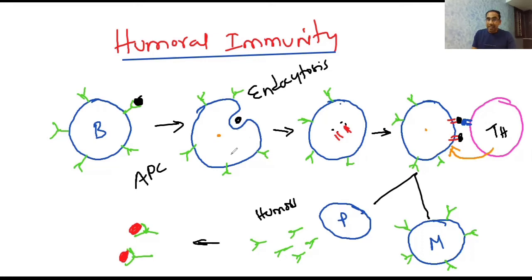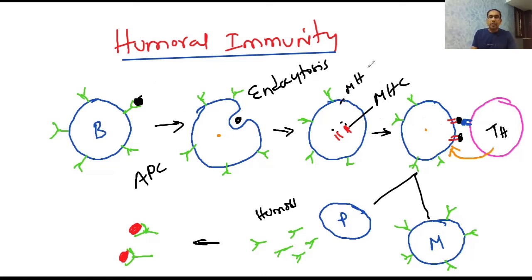The B cell engulfs the antigen, digests it, and processes it. The processed antigenic peptide attaches to MHC — Major Histocompatibility Complex. MHC class 1 is found on the surface of all nucleated cells, while MHC class 2 is present on the surface of antigen presenting cells. The B cell presents the antigen on the surface via MHC class 2.